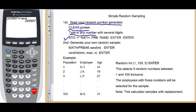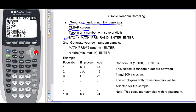The example I have here is a population of 100 employees. So we go to math, we go to probability, scroll down to number five for random integer. Press enter once.